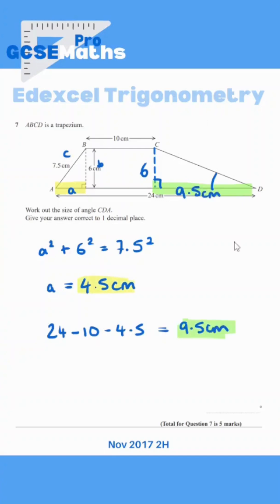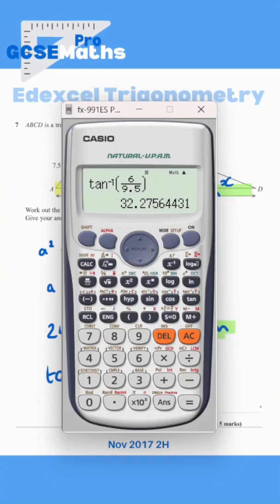Now that I have two sides for the triangle on the right, I can use trig to work out the angle. So we have the opposite and the adjacent, which means I need to use tan. Tan of an angle is the opposite divided by the adjacent, and I would need to use tan inverse on my calculator, which gives me an angle of 32.3 to one decimal place.